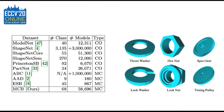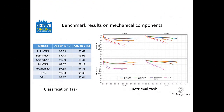As shown in the comparison table of the MCB dataset with other datasets, we collected 58,696 models from 68 classes. In the table, CO and MC stand for Common Objects and Mechanical Components, respectively. To see the effect of orientation and variance property of descriptors, we created Dataset A and Dataset B. Dataset A consists of 70% aligned objects and Dataset B is not consistently oriented. We benchmarked 7 descriptors on 2 datasets.